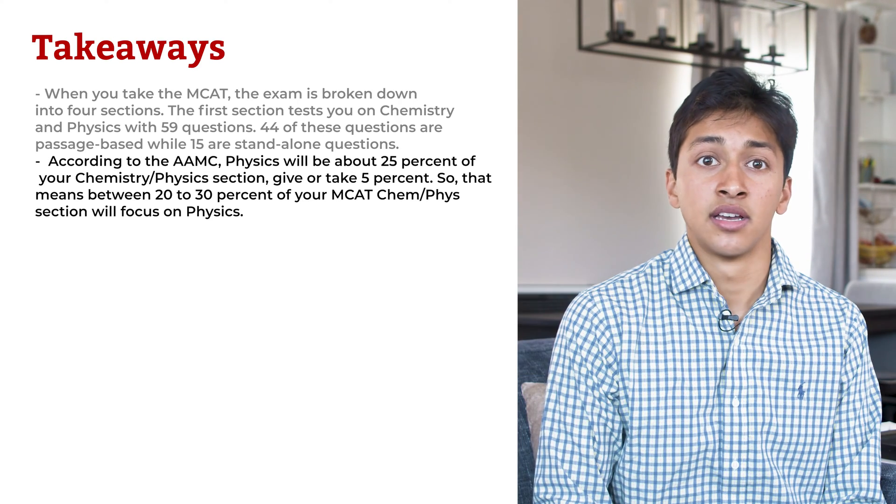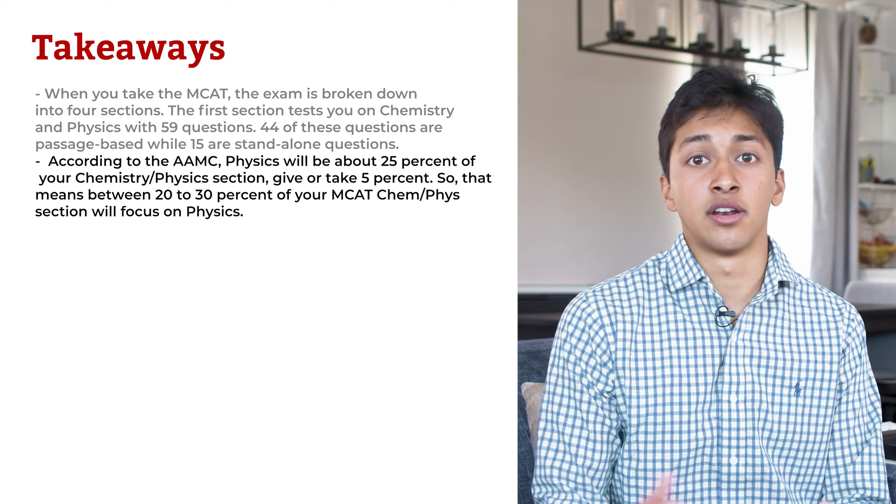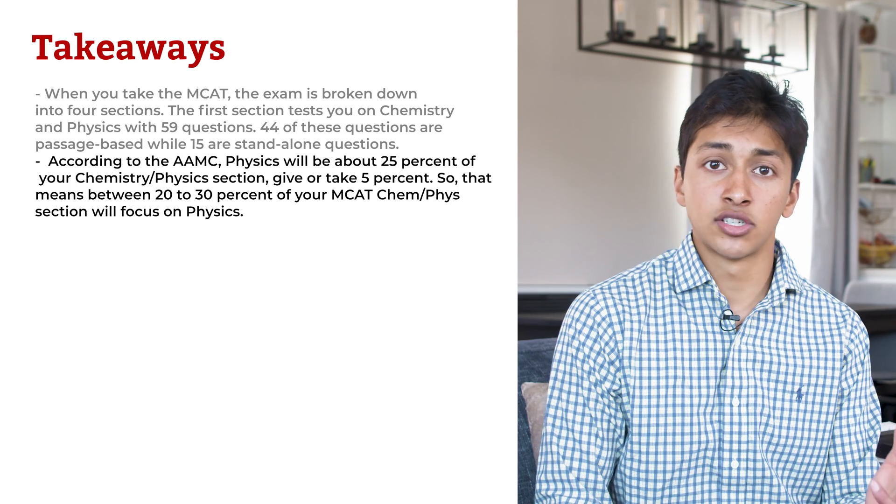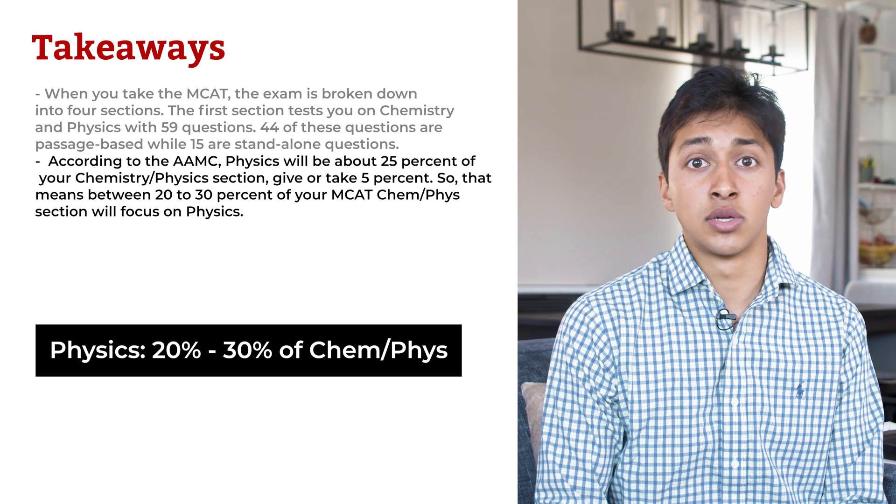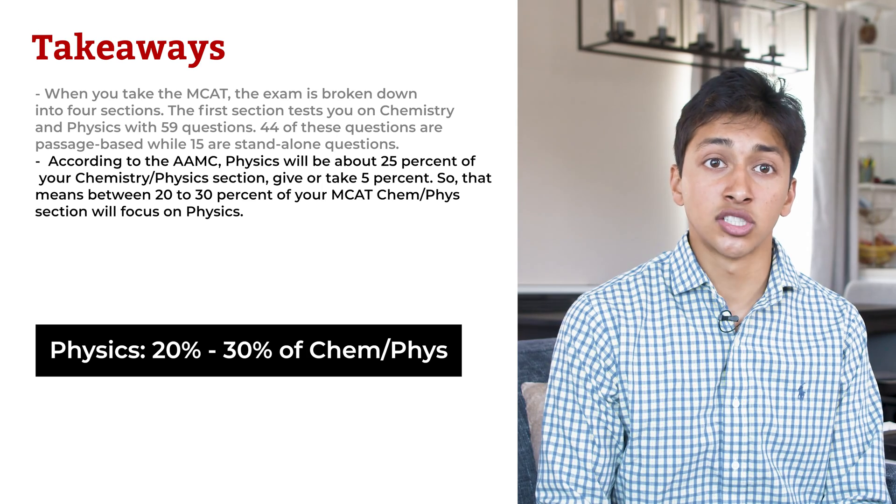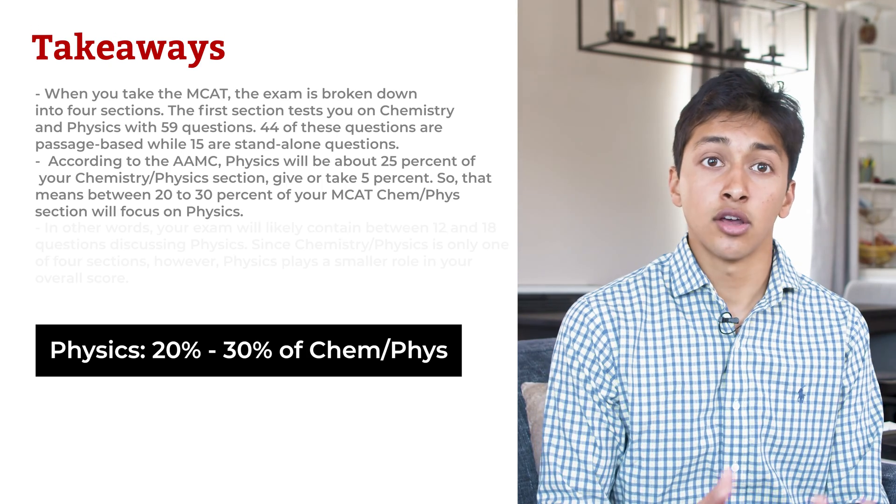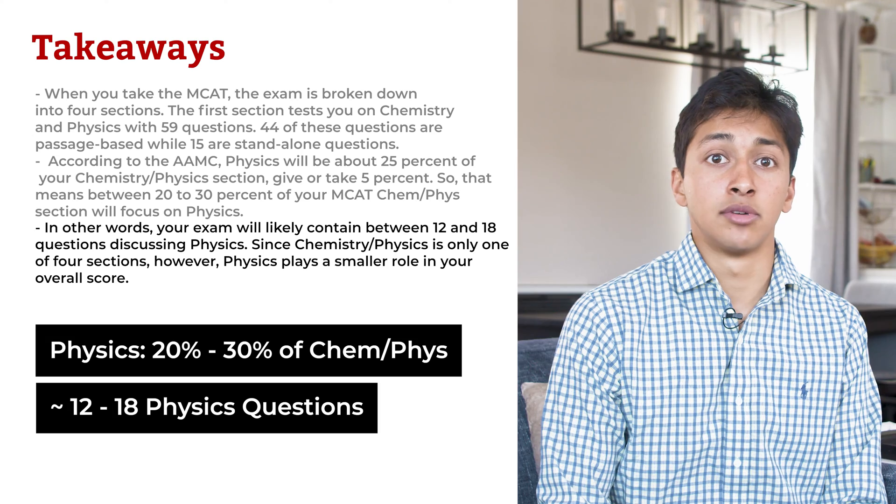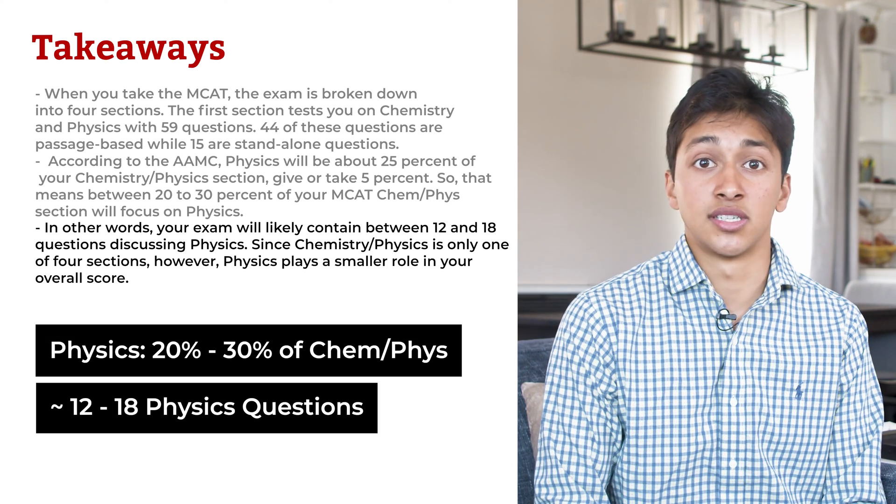According to the AAMC, physics will be about 25% of your chemistry physics section, give or take 5%. So that means between 20 to 30% of your MCAT chem-phys section will focus on physics. In other words, your exam will likely contain between 12 and 18 questions discussing physics.